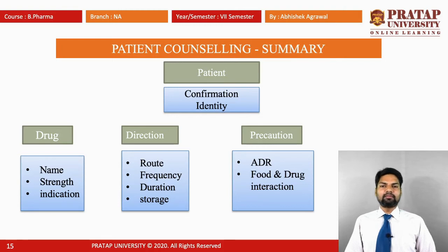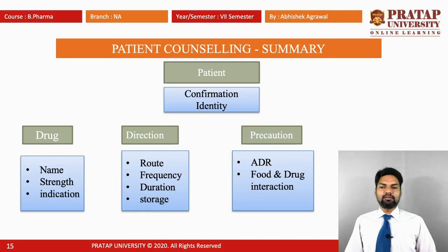In summary: first, the patient identity is confirmed. Then the drug information includes the name, strength and dosage. Direction includes route of administration, frequency, duration and storage. When the patient is taking a drug, considerations should include adverse reactions and food-drug interactions.